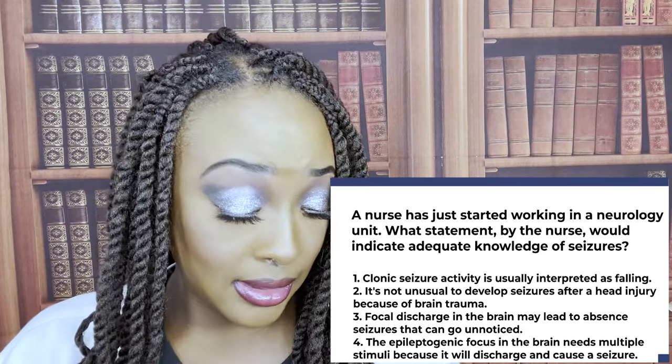Three — a rash is normal while taking this medication. False. A rash may be an adverse reaction — teach the patient that if they develop a rash, don't take the next dose and notify the healthcare provider immediately, because an uncommon but lethal adverse reaction is Stevens-Johnson syndrome. Four — you'll need to have your blood work done frequently. True, because phenytoin has a narrow therapeutic range of 10 to 20. Five — you should wear an ID bracelet indicating you're taking this drug. True, because of the many drug interactions — if something happens, providers need to know. The correct answers are one, four, and five.